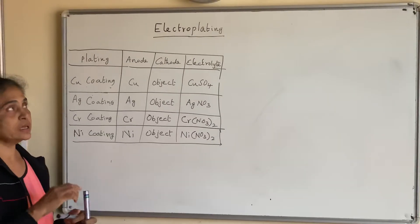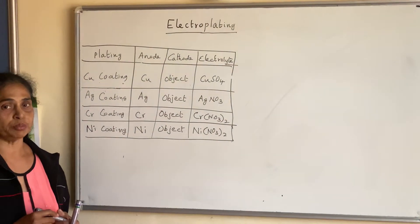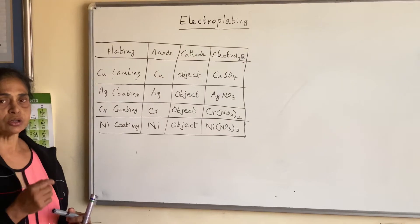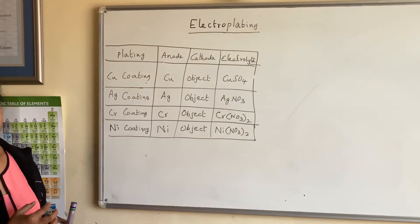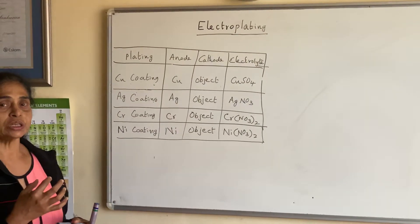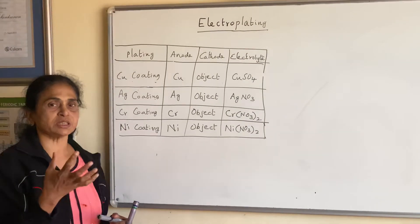In this lesson we are going to learn about electroplating. This is an electrolysis process where we are going to coat a cheap metal with an expensive metal.